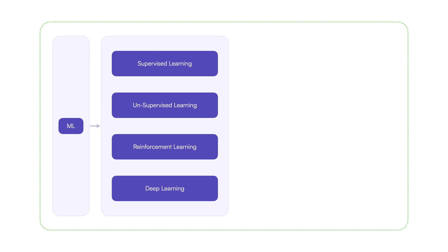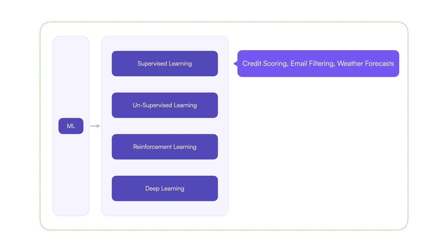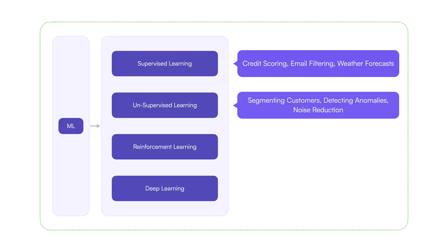Let's quickly explore the applications of some of the machine learning techniques. Supervised learning is used in credit scoring systems, email filtering systems, weather forecasts, and so on. Unsupervised learning is used in segmenting customers, detecting anomalies, grouping items together, or even reducing noise.